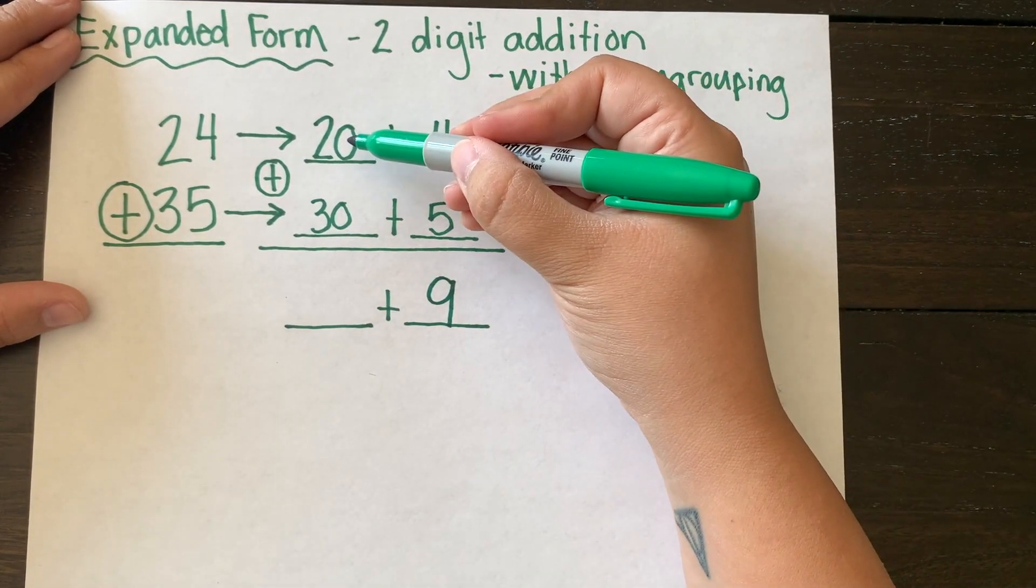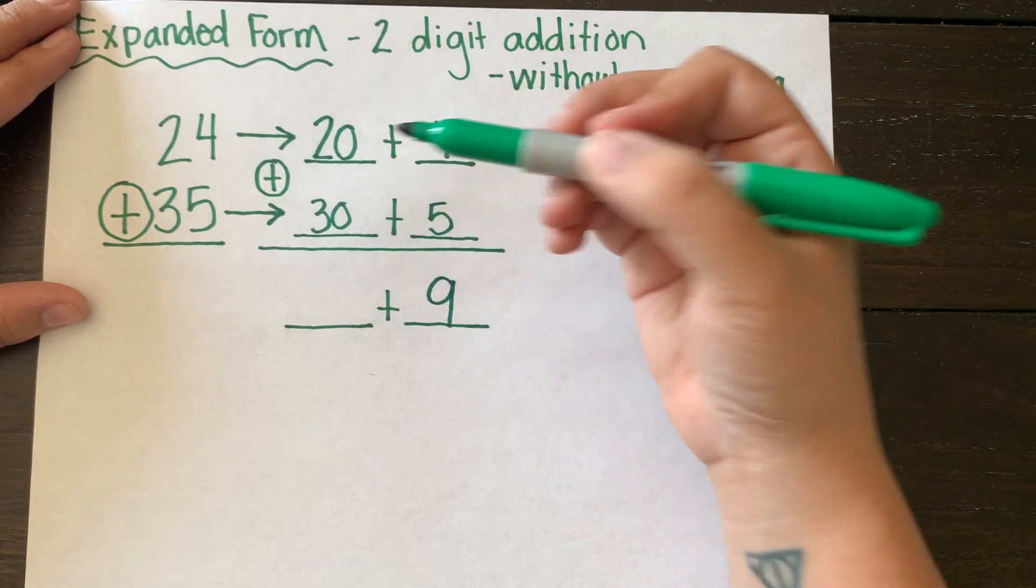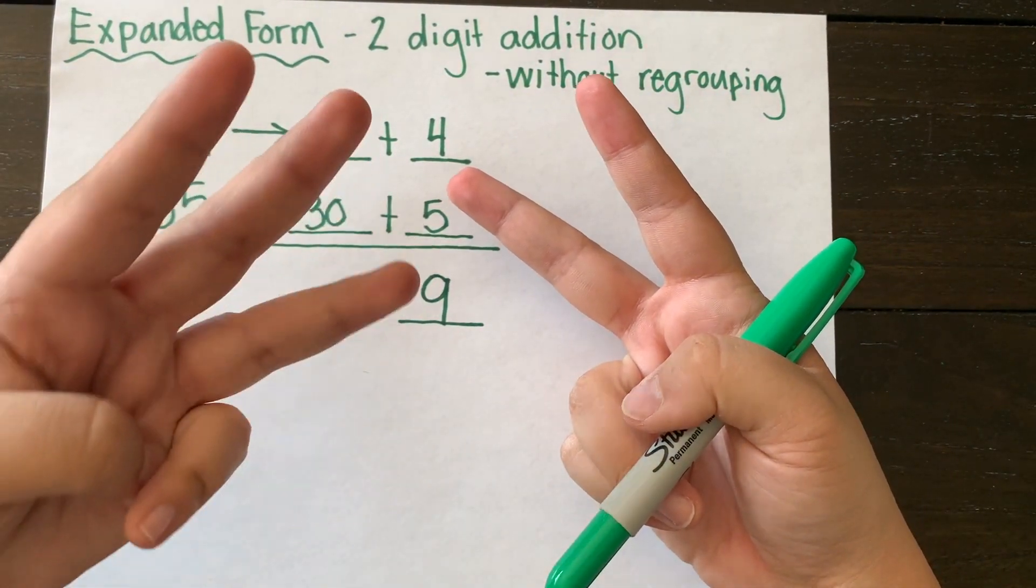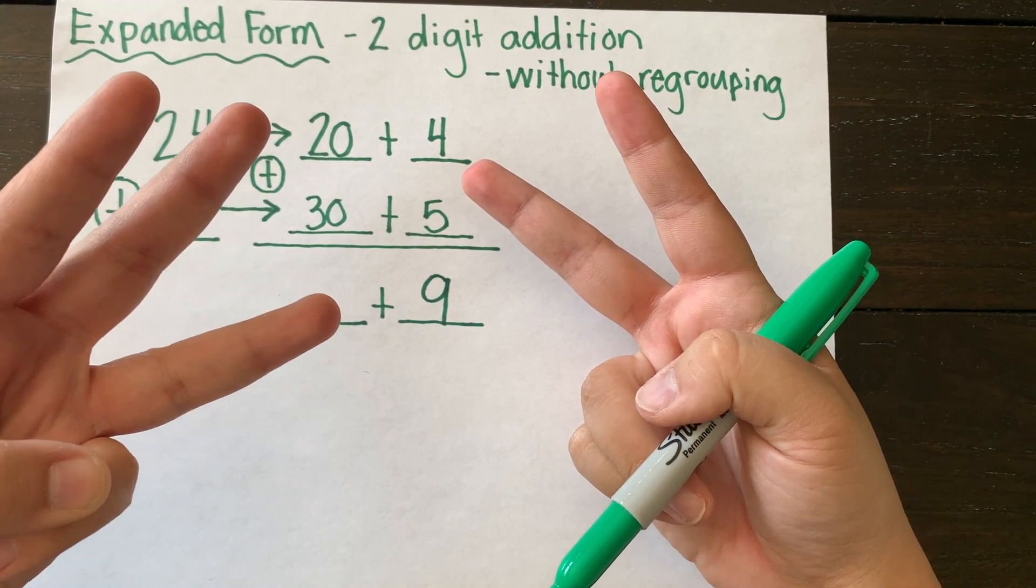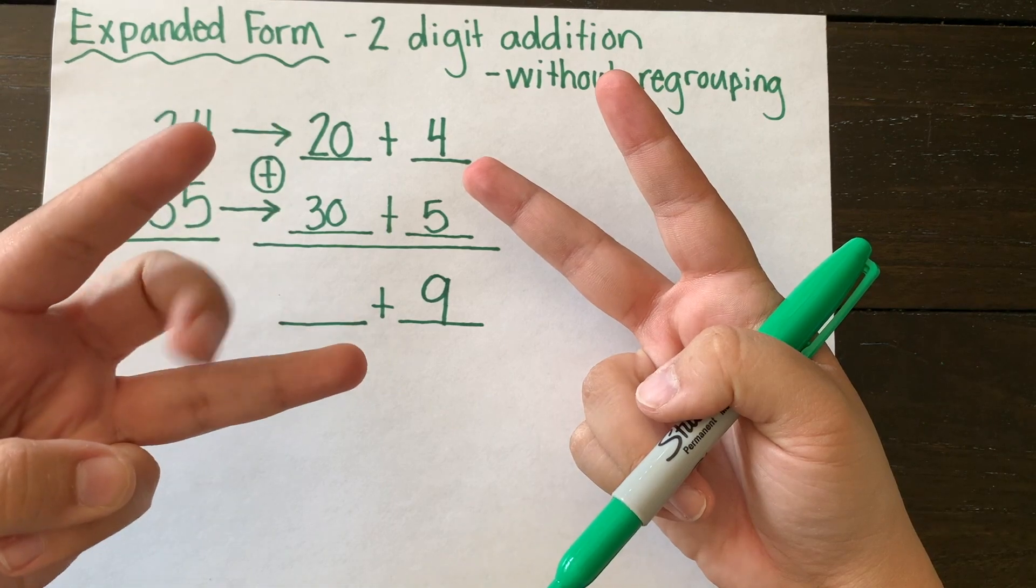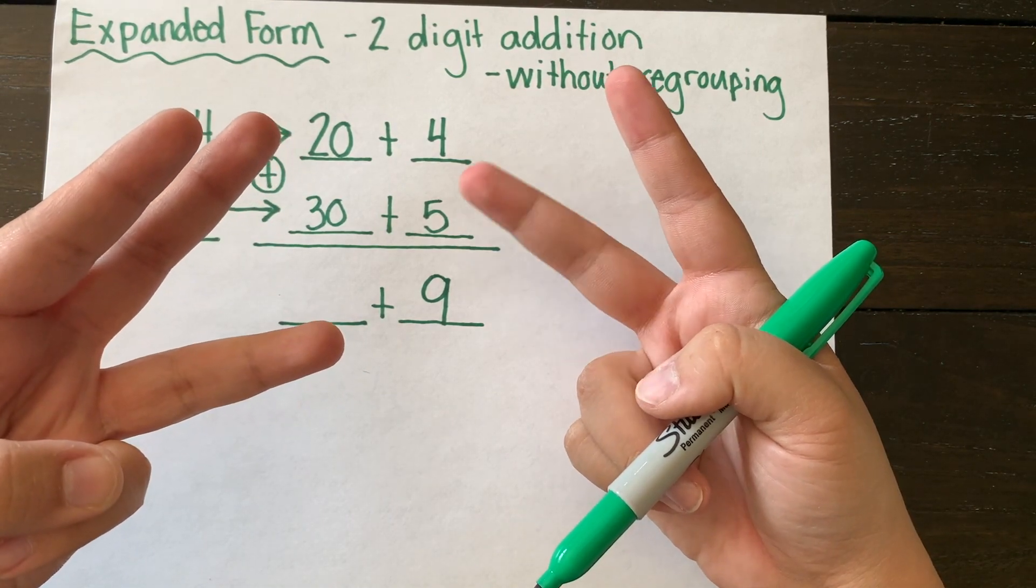Then I'm going to look at my tens column. So I see I have 2 tens plus 3 tens is the same as 20 plus 30. So I'm going to skip count by tens to add. So 10, 20, 30, 40, 50.